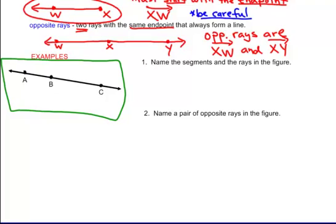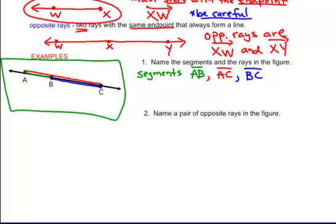Naming the segments and the rays in the figure. I have a line, but on this line I have parts of the line. Starting with the segments: the first segment goes from here to here, which is segment AB. If I name it BA, it is the exact same segment, so I'm not going to rename it. The second segment starts at A and goes to C — segment AC. The last segment starts at B and goes to C — segment BC. These are the three segments in the picture.